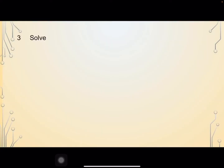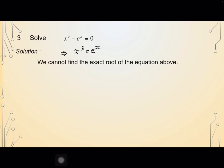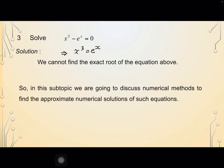Let's consider the third equation: x cubed minus e power x equals 0. We have x cubed equals e power x. The solution for this equation is that we cannot find the exact root. So in this subtopic, we are going to discuss numerical methods to find the approximate numerical solutions of such equations.